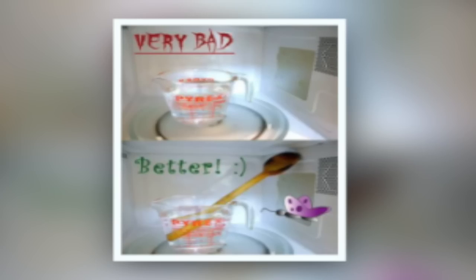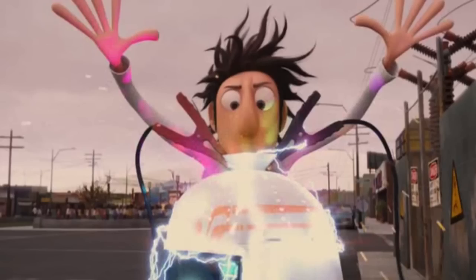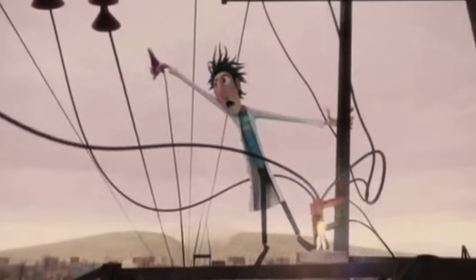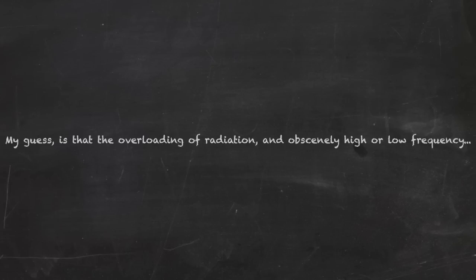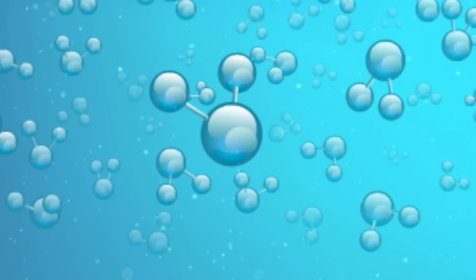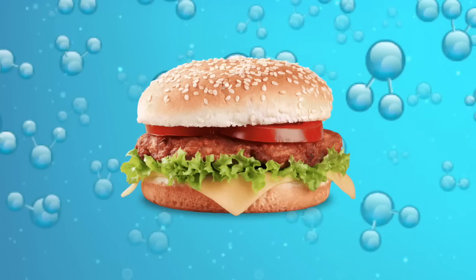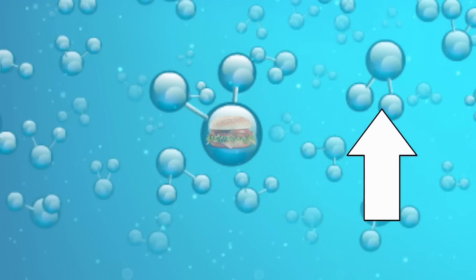People microwave water every day, but not to the extent Flint does. His machine does more and requires a whole power station to activate it. My guess is that the overloading of radiation and obscenely high or low frequency sends the water into a state where the machine can take the genetic code of a cheeseburger and add or remove pieces of the water's molecular code to result in a solid food.